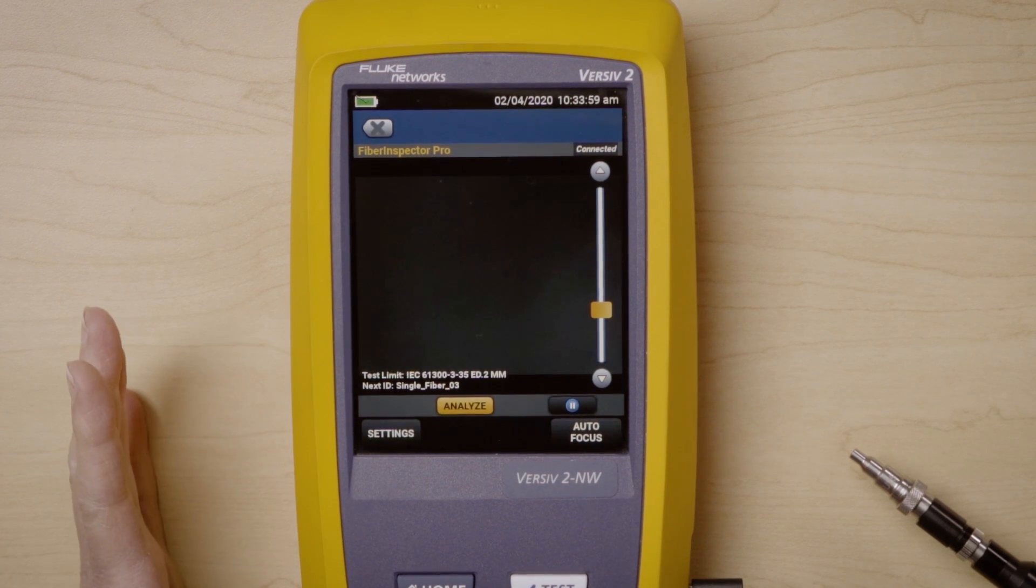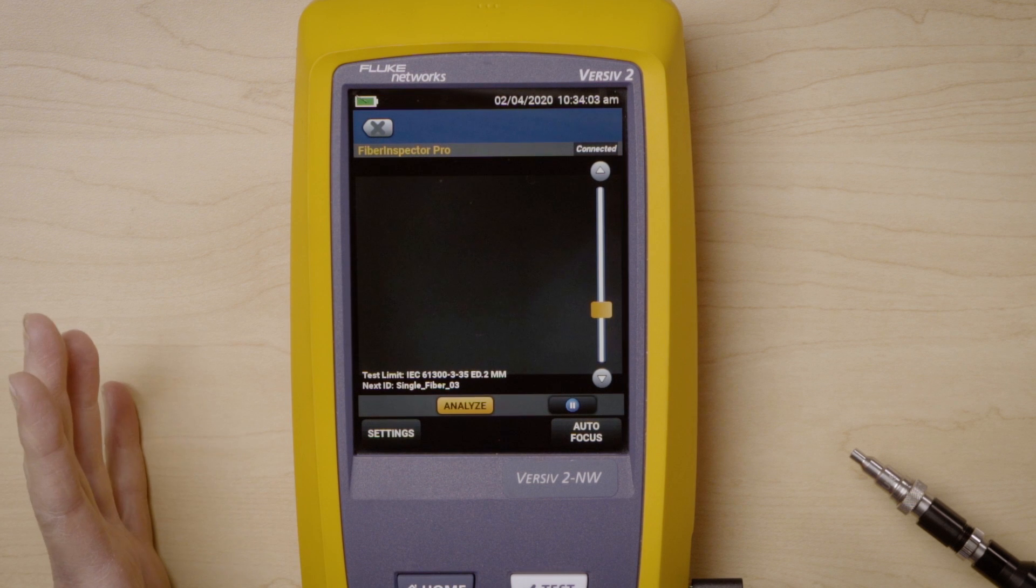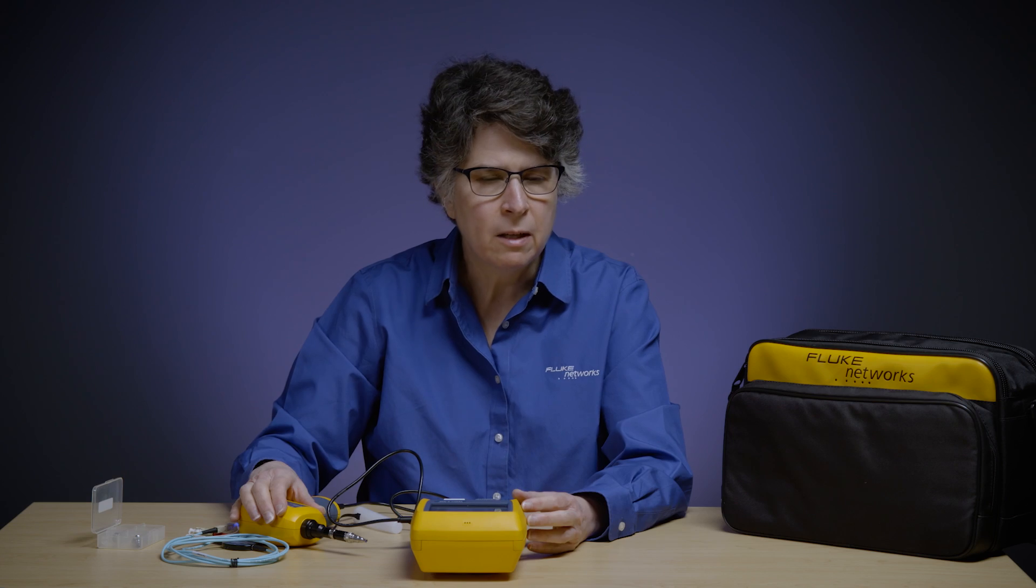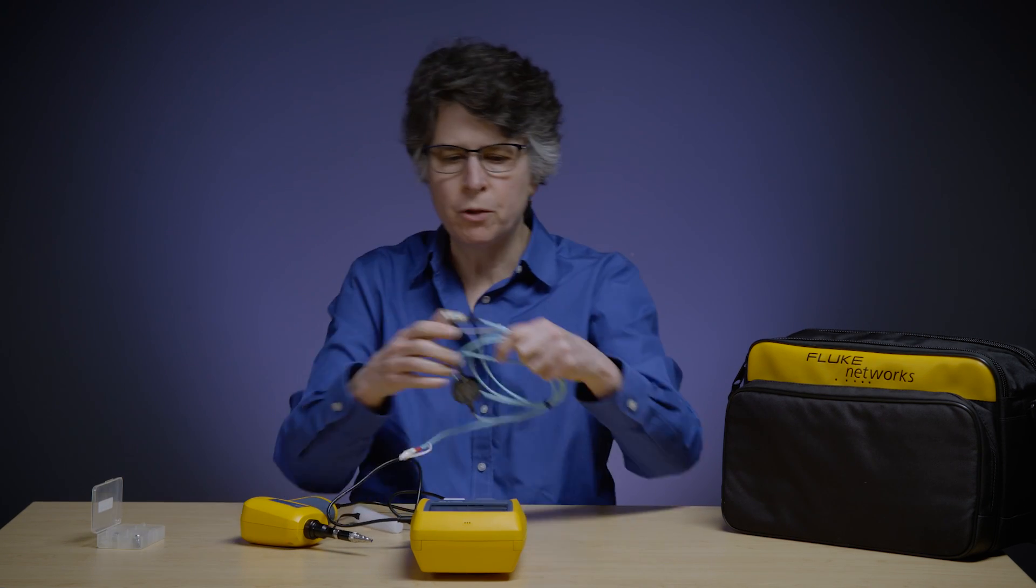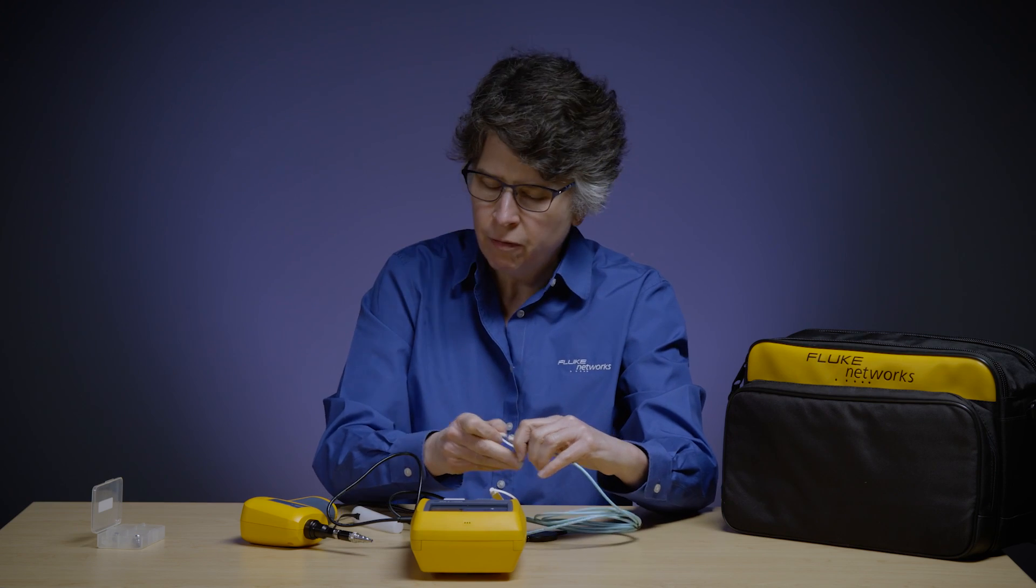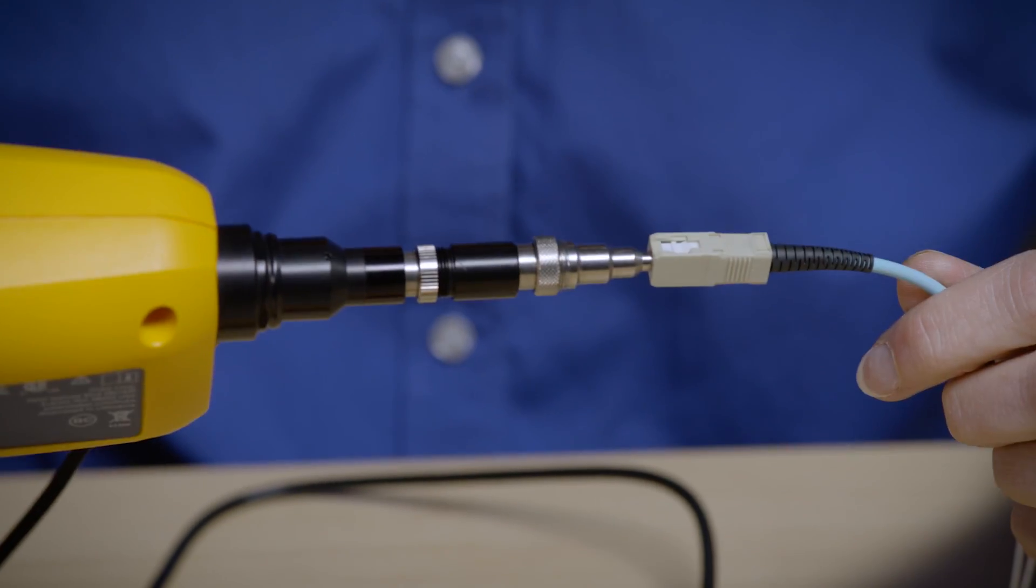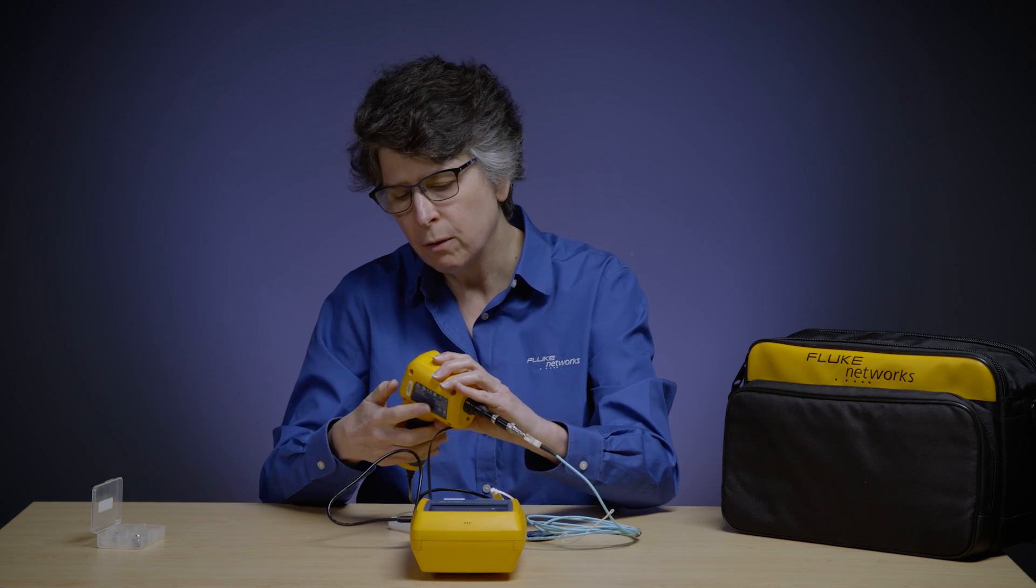One thing to understand about this is this camera is set up for MPO or single fiber. And to have an MPO result, I need to have a very wide screen. So when I actually now hook up to a single fiber interface, it's going to look really small because that is a very wide angle camera, and this is a single fiber.